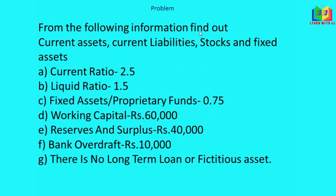From the following information, find out current assets, current liabilities, stock, and fixed asset. Current ratio is 2.5, liquid ratio is 1.5, fixed asset divided by proprietary fund is 0.75, working capital is 60,000, reserves and surplus is 40,000, bank overdraft is 10,000. There is no long-term loan or fictitious asset.